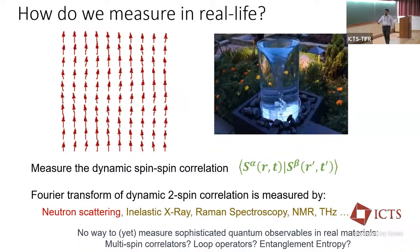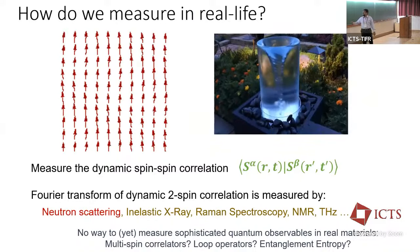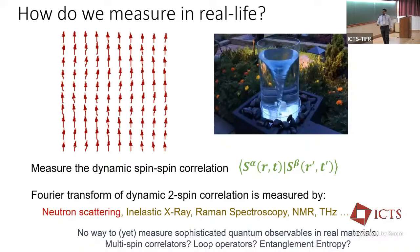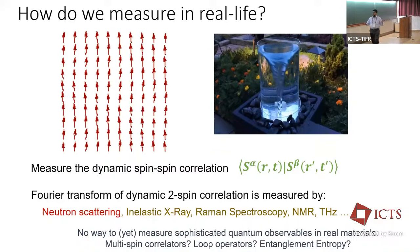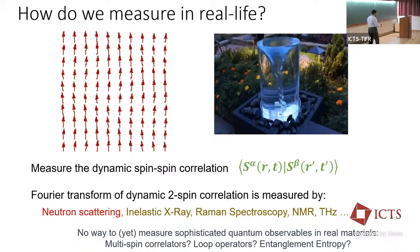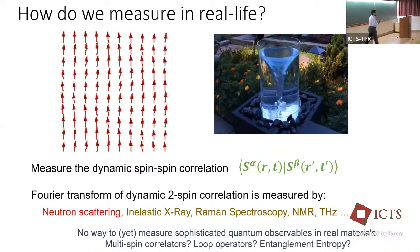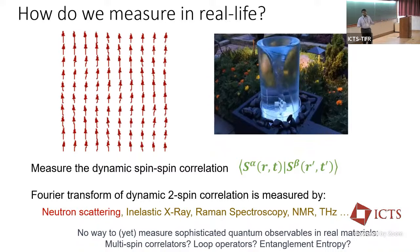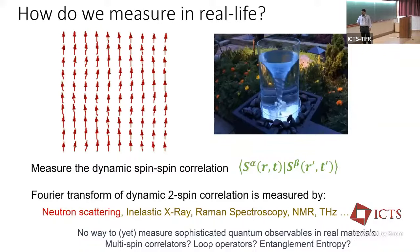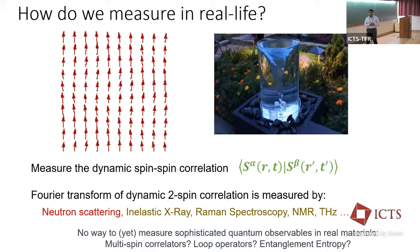What we really measure is the dynamic spin-spin correlation between two spins alpha and beta. There are several ways to measure it — neutron scattering measures the Fourier transform of it, you can also do Raman, resonant inelastic X-ray scattering, NMR, terahertz, and many others. What we don't really have as a tool in the community are more sophisticated quantum observables such as multi-spin correlators, loop operators, or measurements that can give an idea of the entanglement entropy of the system. Developing some of these would be very welcome. Some of the great talks here, like from Andrews and others, were discussing four-spin correlators, which are very important.